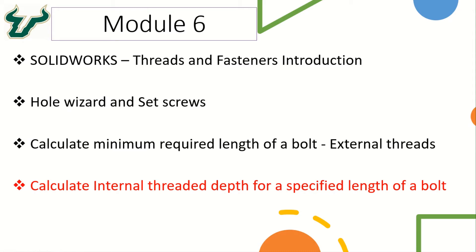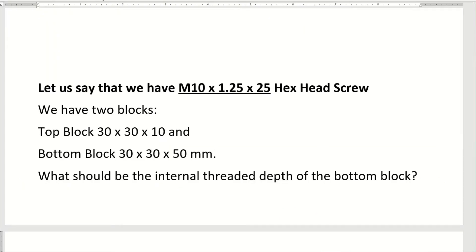Hello everyone. Let's calculate the internal threaded depth for a specified length of a bolt. We have a hex head screw with the specification M10 by 1.25 by 25 — pitch of 1.25 millimeters, nominal diameter of 10 millimeters, and length of 25 millimeters. The screw passes through the center of two blocks: the top block is 30 by 30 by 10 mm, and the bottom block is 30 by 30 by 50 mm. We need to calculate the internal threaded depth for the bottom block.